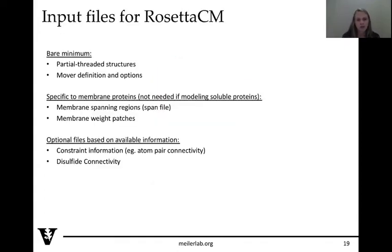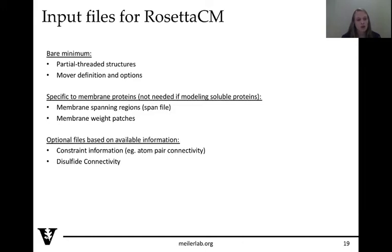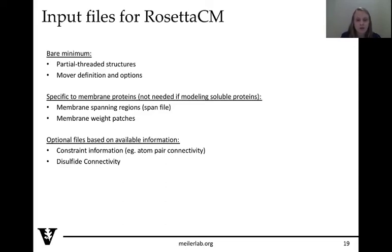The bare minimum input files for Rosetta CM are your partially threaded structures, the mover definition, and your options — typically an XML script plus options for running. For membrane proteins specifically, you'll also need a span file defining the spanning regions and the membrane weight patches. Other files you might want to include are constraint information — for example, if you know from experiments that certain residues are close to each other — and disulfide bond information if your protein has disulfide bonds.